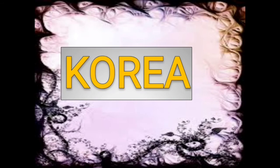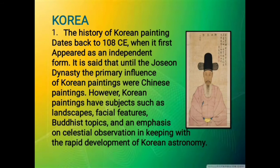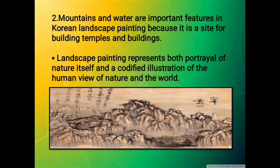The last East Asian country to be discussed is Korea. The history of Korean painting dates back to 108 CE when it first appeared as an independent form. Until the Joseon dynasty, the primary influence on Korean paintings were Chinese paintings. However, Korean paintings have subjects such as landscapes, facial features, Buddhist topics, and an emphasis on celestial observation, in keeping with the rapid development of Korean astronomy. Mountains and water are important features in Korean landscape painting because they are sites for building temples. Landscape paintings represent both a portrayal of nature itself and a codified illustration of the human view of nature and the world.